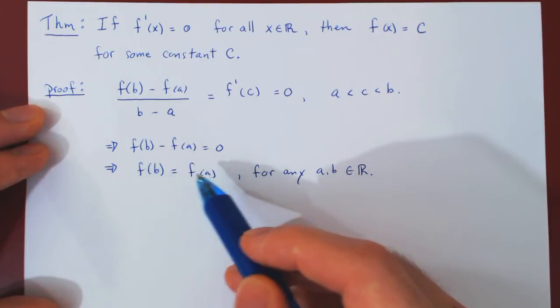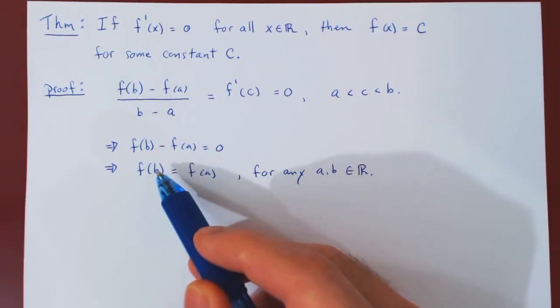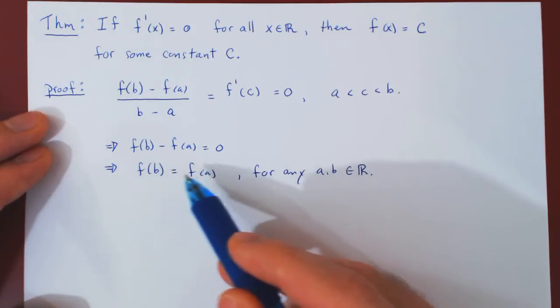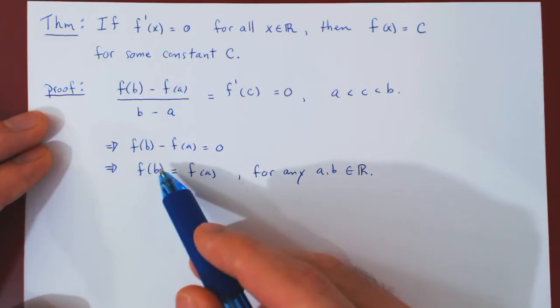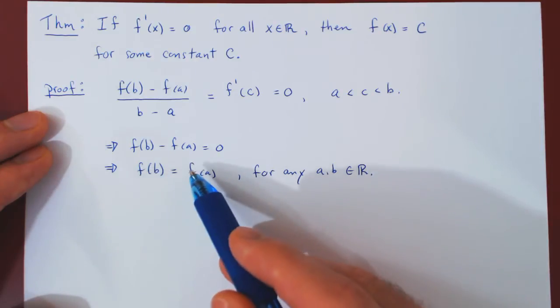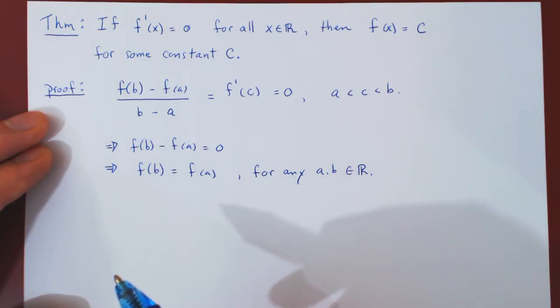Right? At any two different x values, x equals a and x equals b, the function will always have the same y value. f at some point a is equal to f at some point b. So the value of the function is the same at any two different values of x.